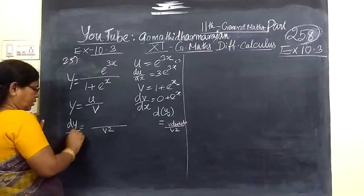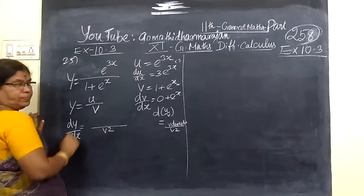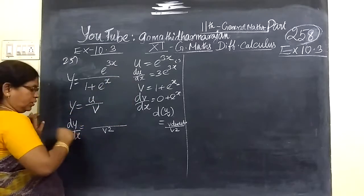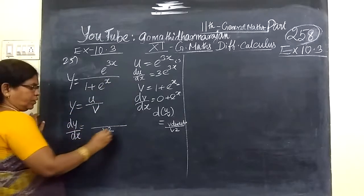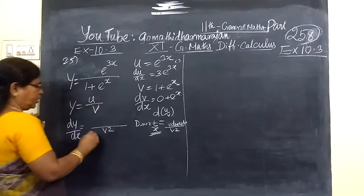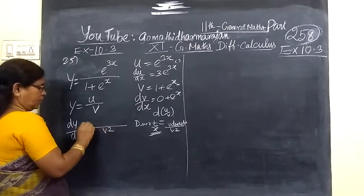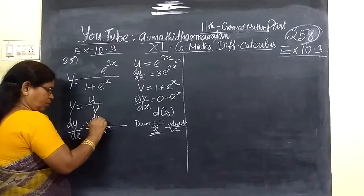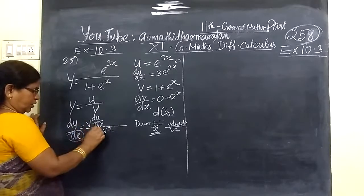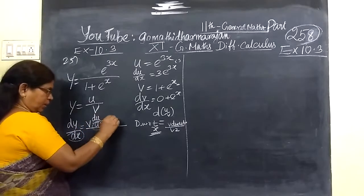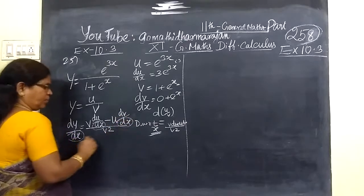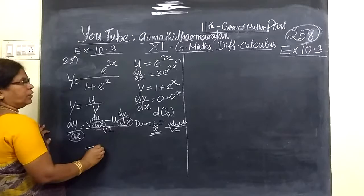Differentiated with respect to — not U of V. Here U and V have been separated. Here differentiated with respect to here, differentiated with respect to here. That happened. Now we have this: V appear, V, U by D. Here are U, V by D. Here are U, D, V by D. Here are U, D, V by D. Here are U equal to V in X.